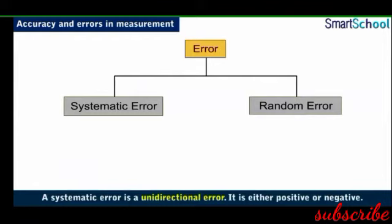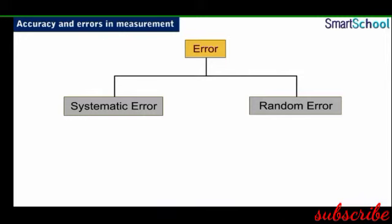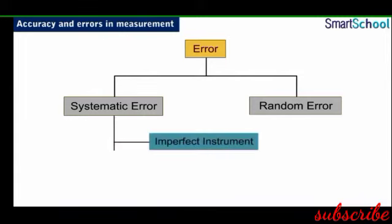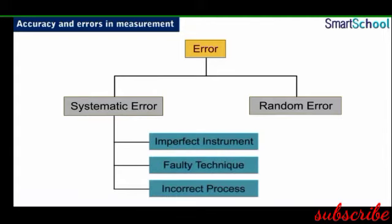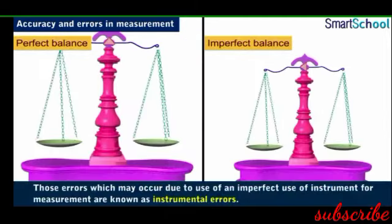A systematic error is a unidirectional error, that is, it is either positive or negative. A systematic error can occur due to an imperfect instrument, a faulty measurement technique, or incorrect process of measurement. Errors that occur due to imperfect use of an instrument are known as instrumental errors.